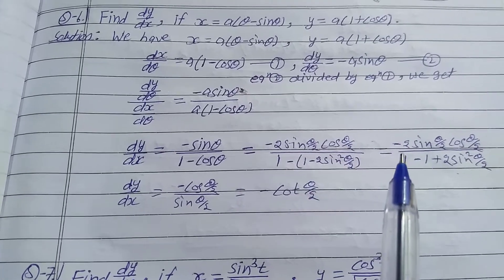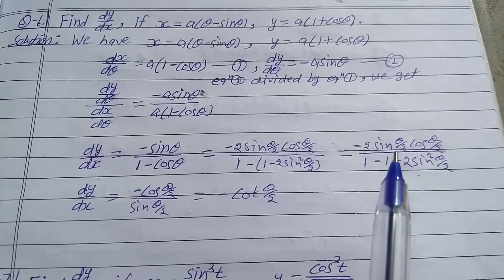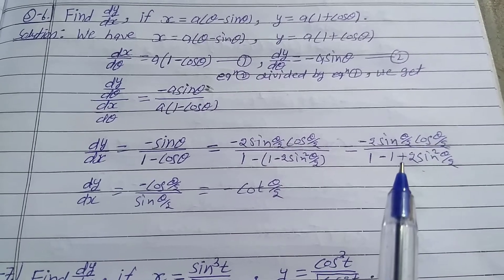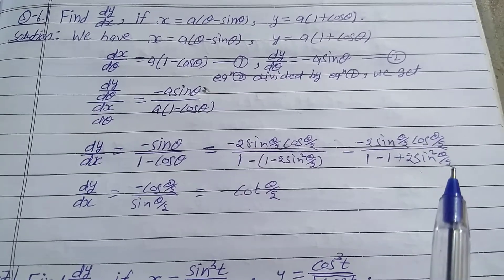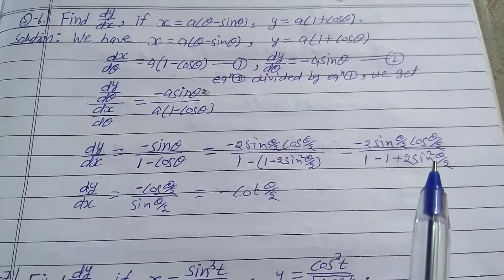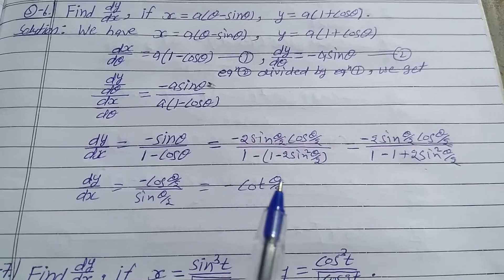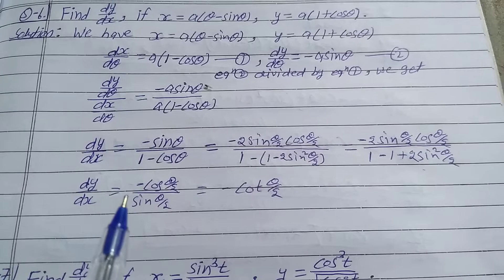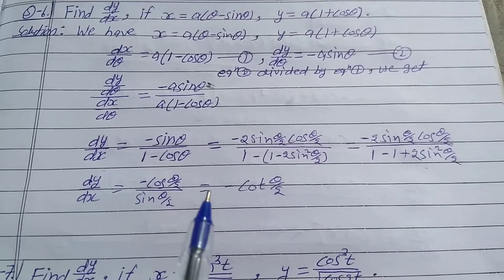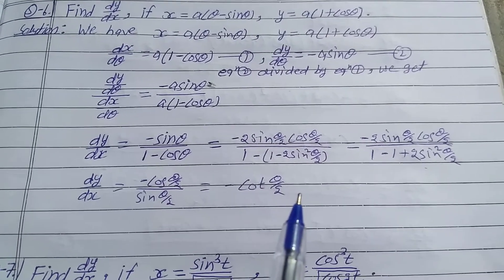Simplifying the denominator: 1 - (1 - 2 sin²(θ/2)) = 2 sin²(θ/2). So dy/dx = -2 sin(θ/2) cos(θ/2) / (2 sin²(θ/2)) = -cos(θ/2) / sin(θ/2) = -cot(θ/2). That is the solution.